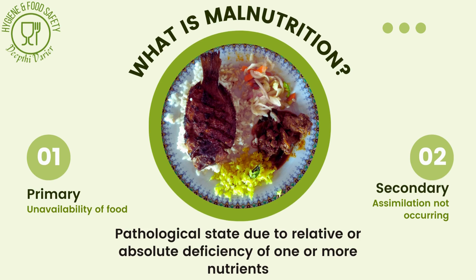Primary malnutrition is the type that occurs due to non-availability of food. When a particular food is not available to the individual, it could be due to poverty, a very high birth rate in a particular population, illiteracy or poor lactation, food prohibition in a particular region, or increased maternal deaths due to which children are not breastfed. These are the various reasons why a particular food is not available, and that causes primary malnutrition.